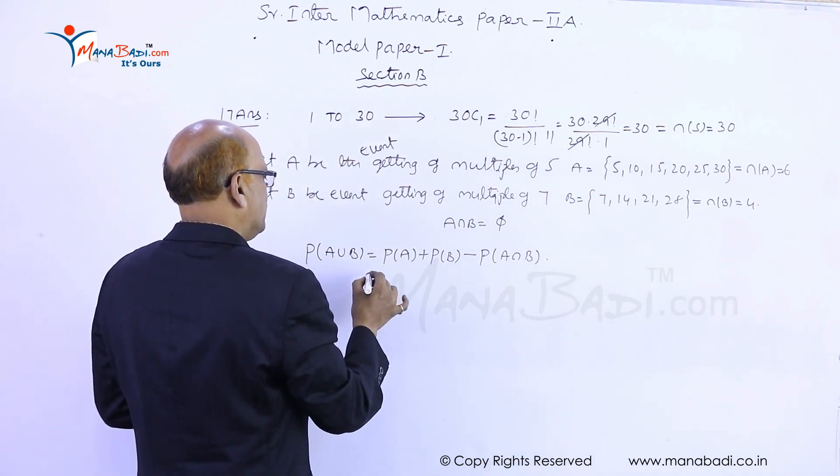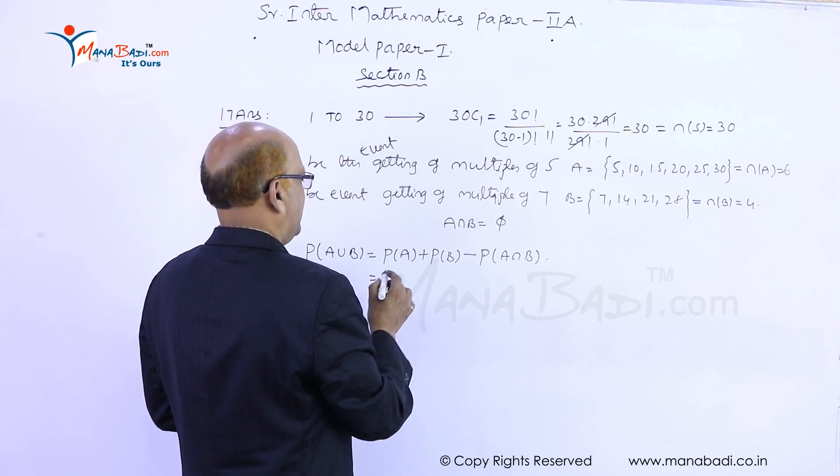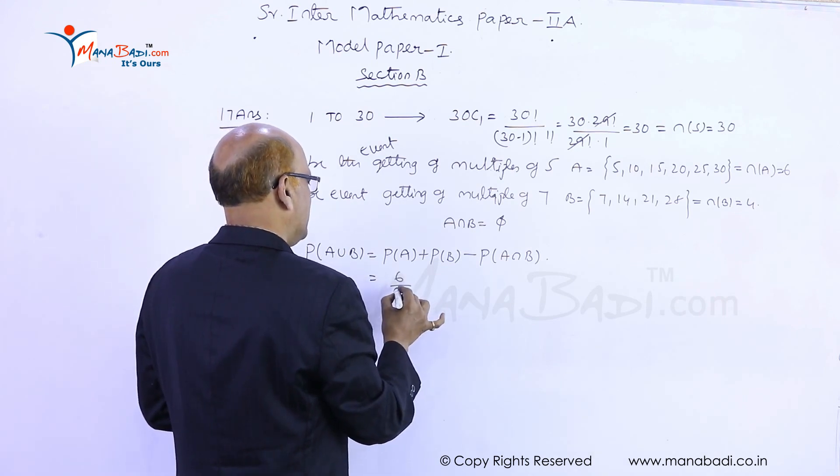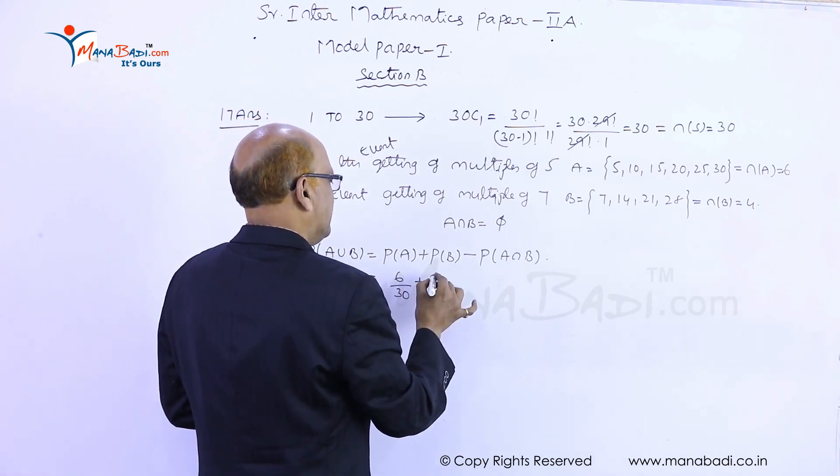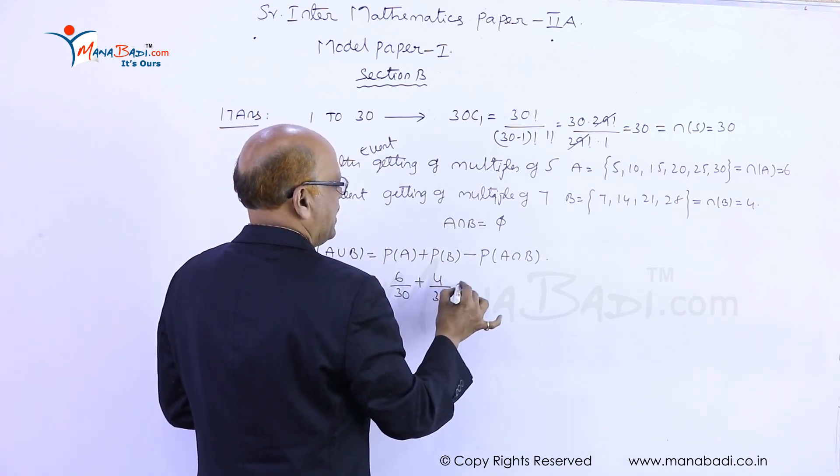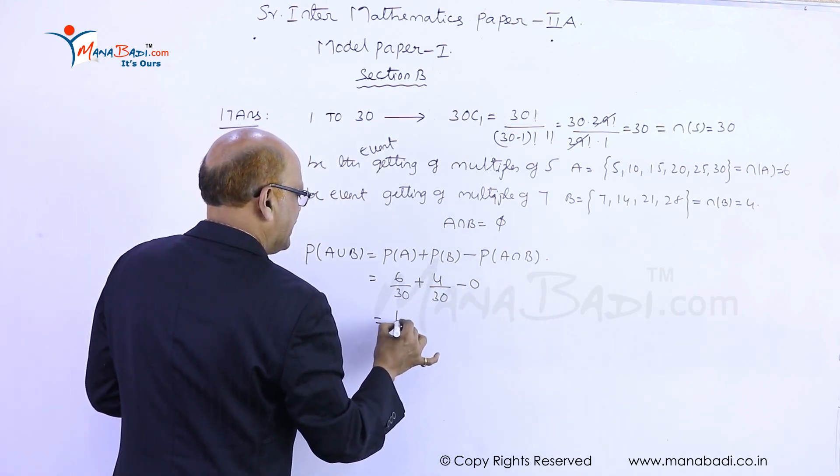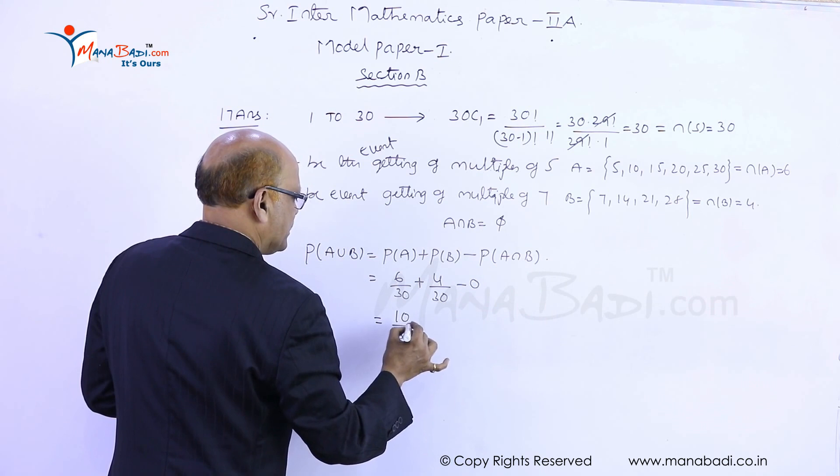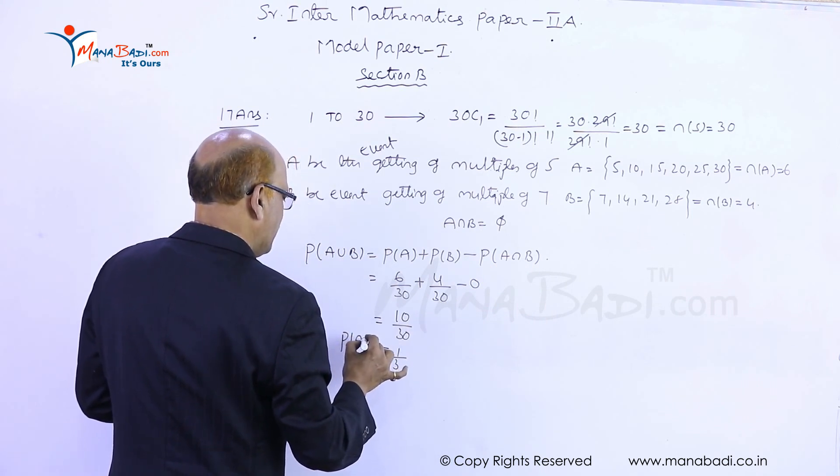Now what is the probability of A? It is n(A) by n(S), which is 6 by 30. Probability of B is 4 by 30, and this will be 0. So this equals 10 by 30, which equals 1 by 3.